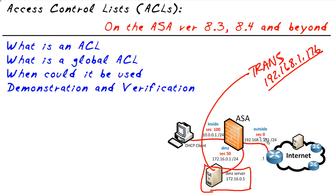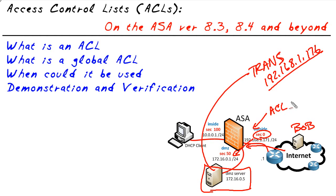Secondly, we have to solve the problem of the security level. By default, whenever a user on the Internet is trying to source a packet and they're trying to go into an interface on the ASA, if that packet is supposed to be forwarded to a higher security interface — like from zero going to 50 — the ASA says no way. Initial traffic doesn't flow from low security to higher security interfaces, like the outside to DMZ. One way of solving that is with an access control list that permits traffic from anywhere on the Internet if it's destined to this server and the destination port is TCP port 80 for web services.